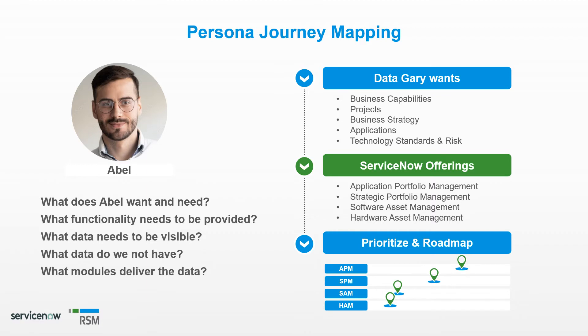Now back to Abel, the Enterprise Architect. A common way to use personas is in mapping out a customer's journey. To do this, we start with more questions, such as what does Abel want and need, what functionality needs to be provided, what data needs to be visible, and what modules deliver that data.